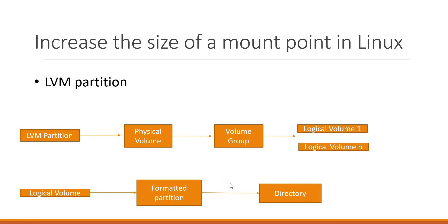To increase the size of a mount point, we need to increase the size of the logical volume and also grow the corresponding file system size. To increase the size of the logical volume, if we have enough size in the volume group, then directly we can increase the logical volume size. But if we don't have enough size in the volume group, we have to extend the volume group first by extending the physical volume and the partition size. In this video, we will see how to increase the logical volume size as well as how to extend these sizes.